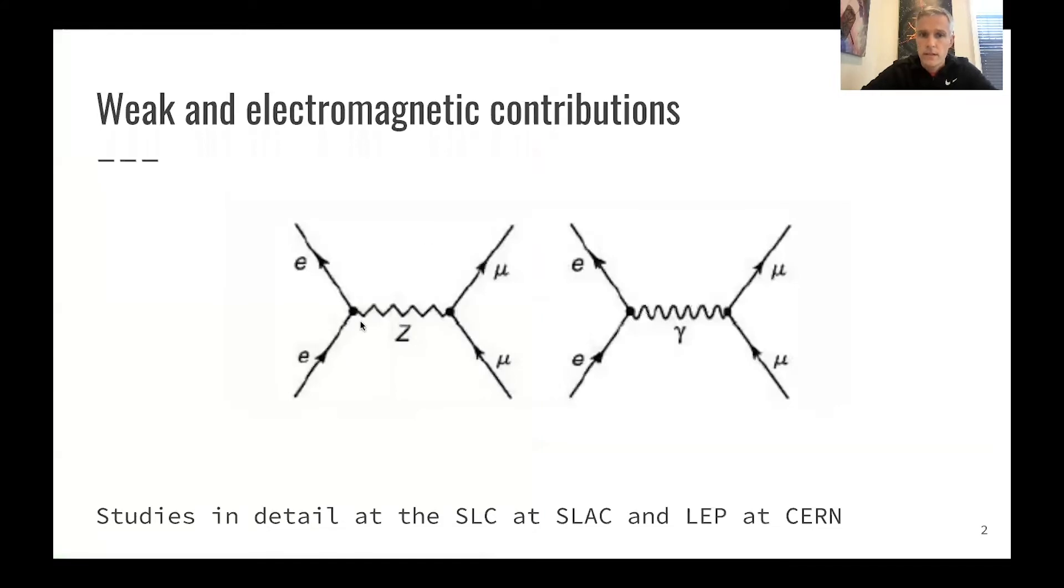So studying those two processes here, where there's an electron and a positron, through some process, including a z-boson or photon, resulting in a muon and an antimuon, those processes have been studied in great detail at SLAC and at CERN with the SLC and the Large Electron-Positron Collider.